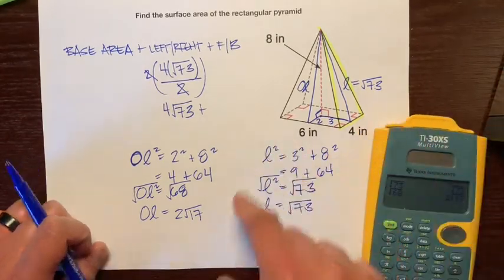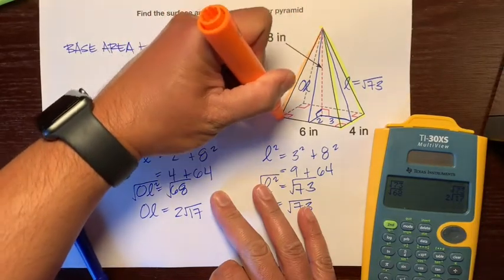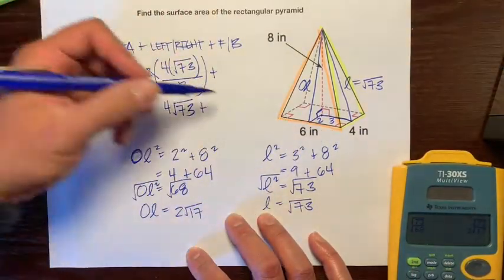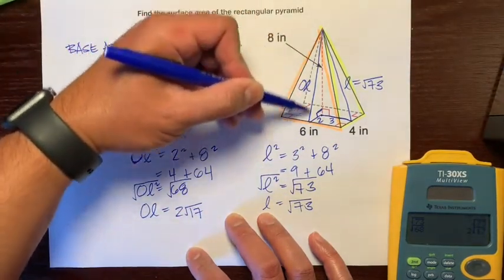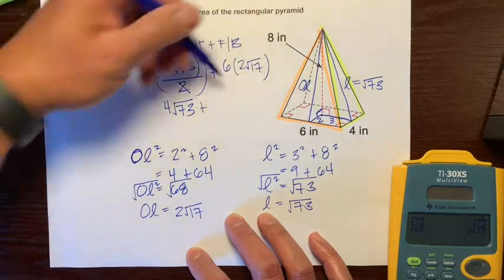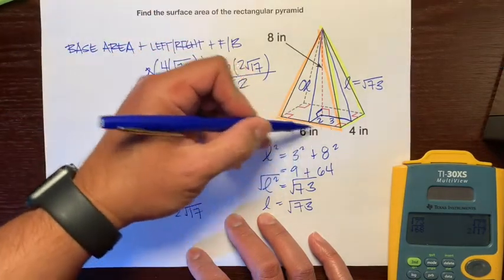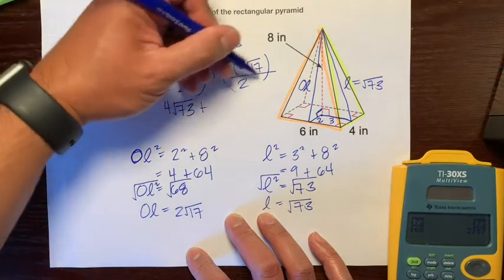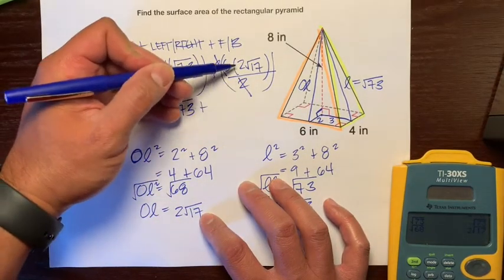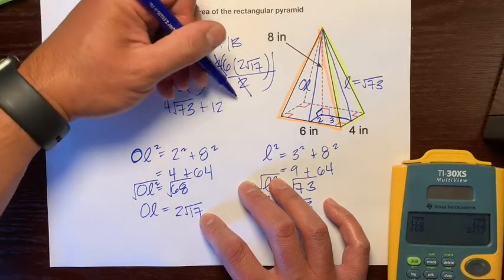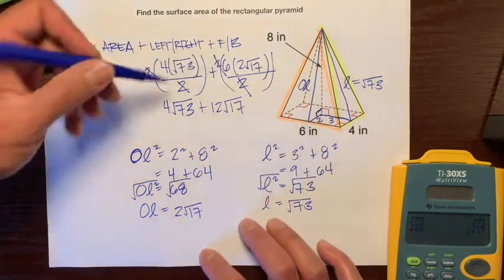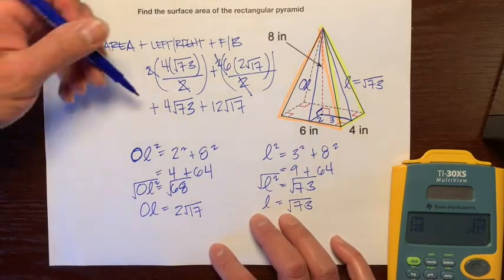Now we can find the area of the front triangle: base times height divided by 2. The base is 6, and the slant height is 2 radical 17, divided by 2. This triangle is congruent to the back triangle, so multiply by 2. Cancel the 2s: 6 times 2 radical 17 equals 12 radical 17. Now we have the front and back area. The base area is just a rectangle: 6 times 4 is 24.